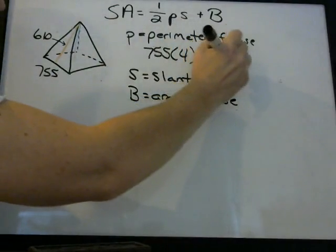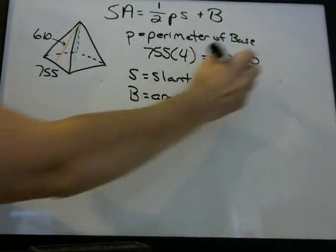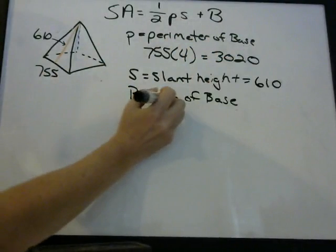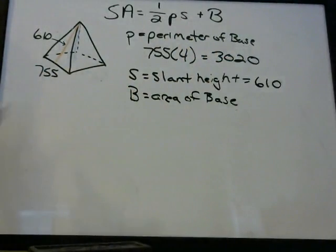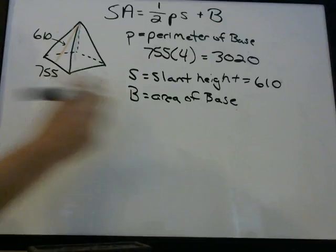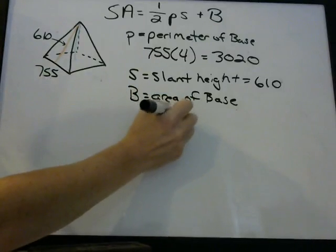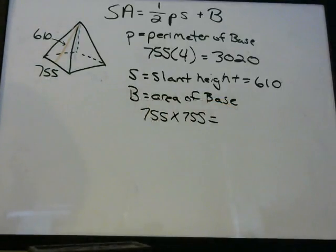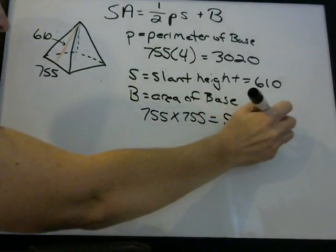The perimeter is 3,020 feet. The slant height is given to us: 610. The area of the base — length times width — is 755 times 755, which is 570,025.